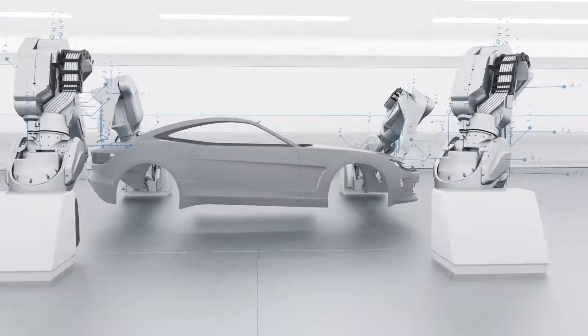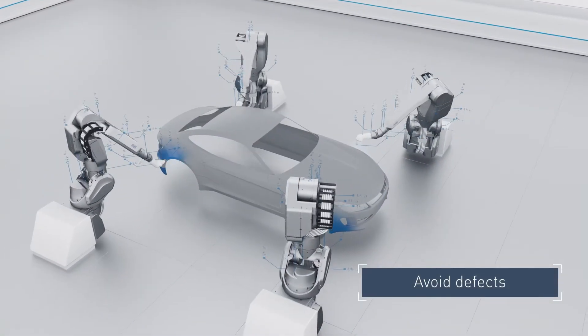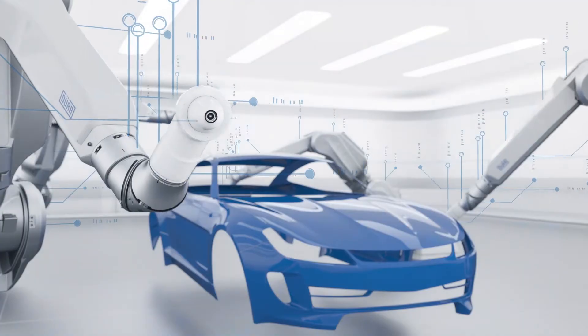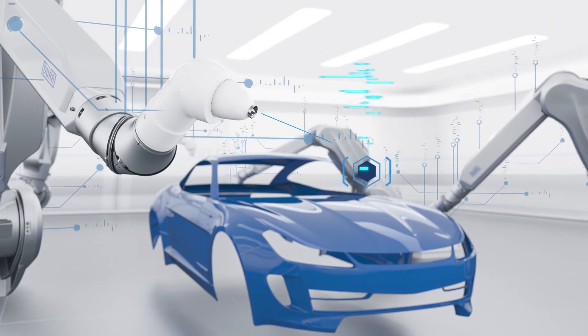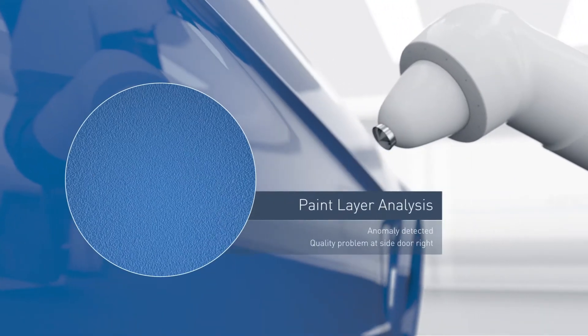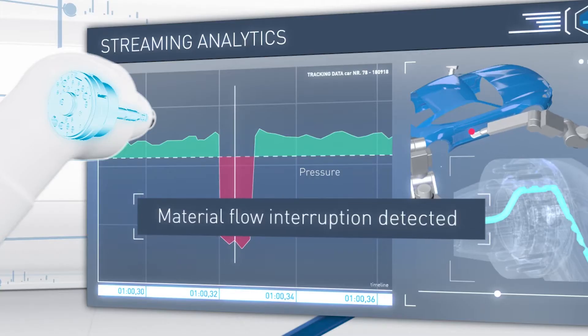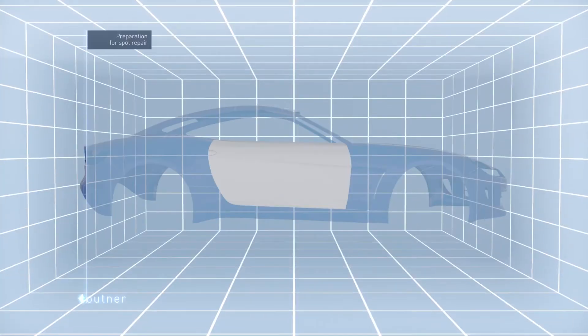At machine level, the system collects and evaluates high-resolution data, for example, of a robot. We do this as close as possible to the machine on so-called edge devices. This way, a fault can be discovered straight away and repaired.